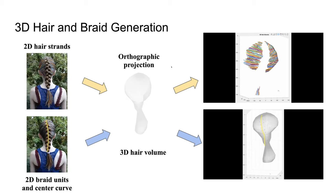We project the 3D hair volume back to the x-y plane. For each 2D hair data point p in the hair image, we find the three nearest projected points and calculate the z-coordinates of p by linear interpolation of the z-coordinates of those 3D points in the 3D hair volume.